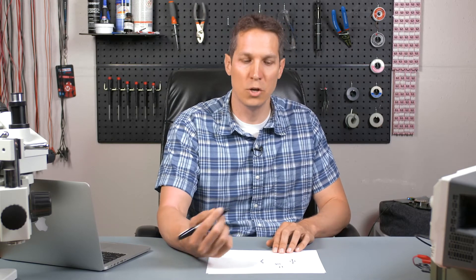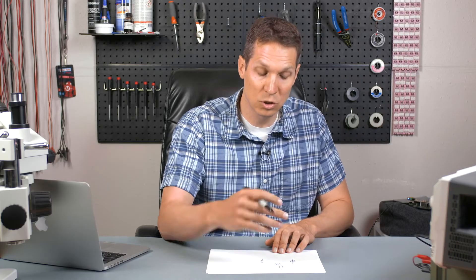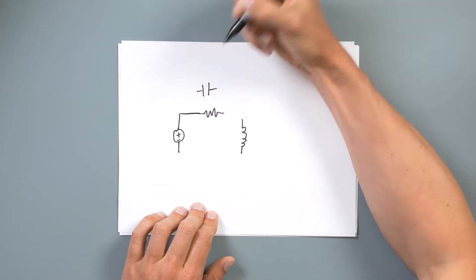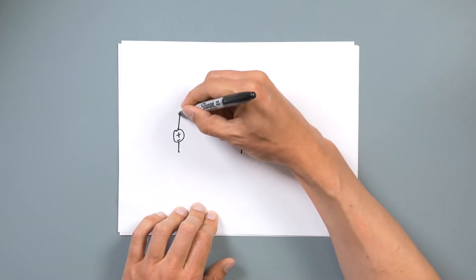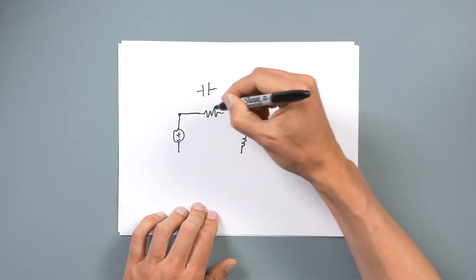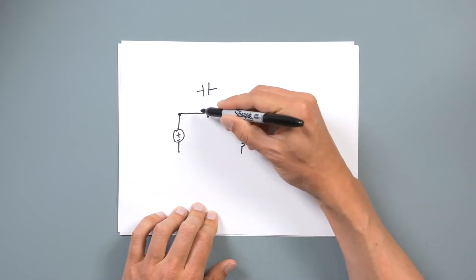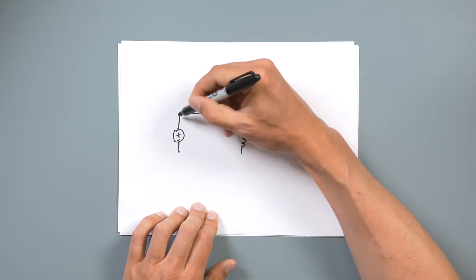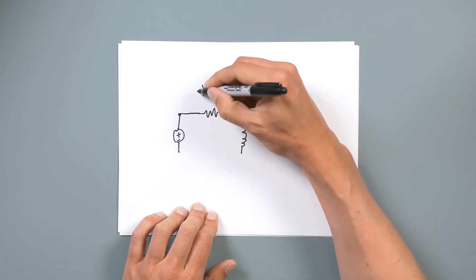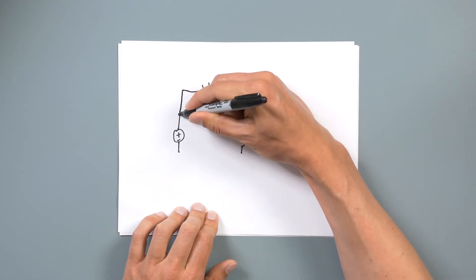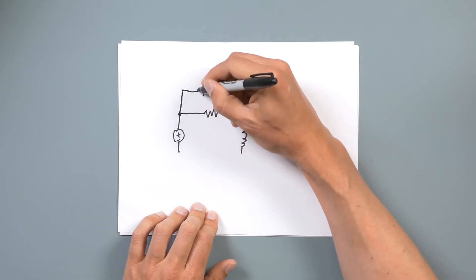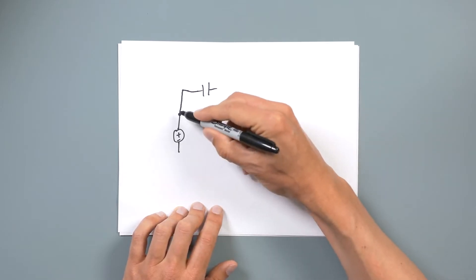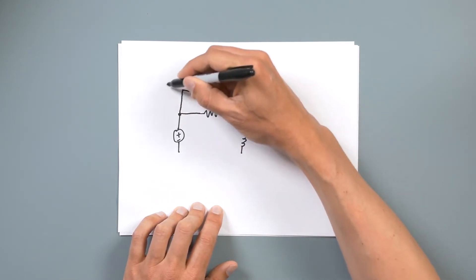Now let's talk about nodes. A node is basically where any two or more things are connected. I'm going to connect these right here. We usually put a dot at a node, but that can be kind of confusing because it's more of just an area. So right now this voltage source is connected to this resistor, and we say there is a node here — only these two things are connected to that node. However, we can bring in this capacitor, and now it's also sharing one of its terminals, connected to the same node.